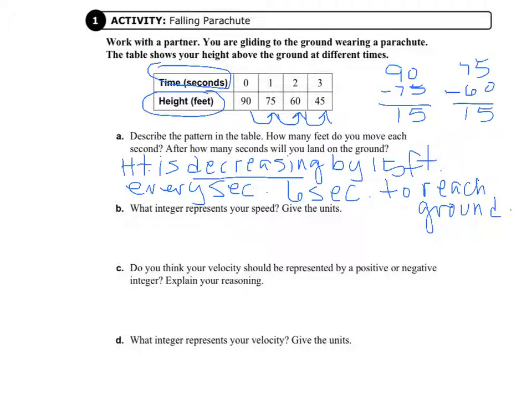Now let's look at letter B: what integer represents your speed, and give the units. If we look at 15 feet every second, we can represent that as 15 feet per second. That is a speed — just like 60 miles per hour — because it tells a distance in a specific amount of time. The units are feet and seconds.